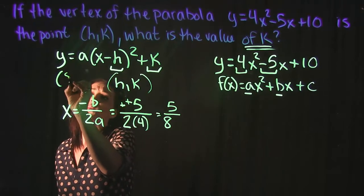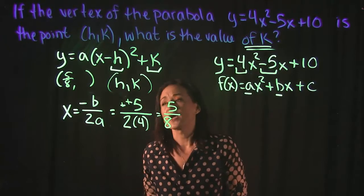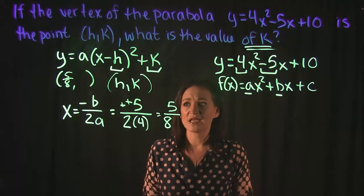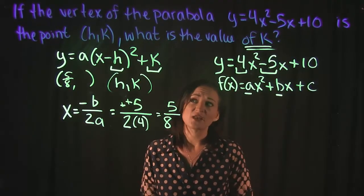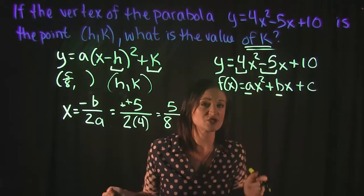Out of (h,k), we know h is 5/8. We need to figure out what k is. Remember that 5/8 is just an x-value in our equation, and if we plug in that x-value into our equation, we should be able to figure out what y is.